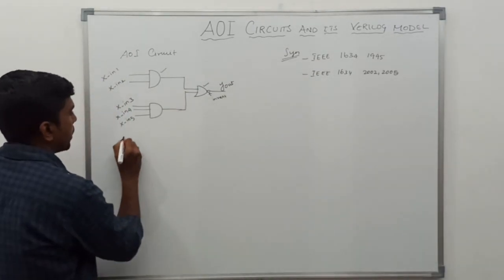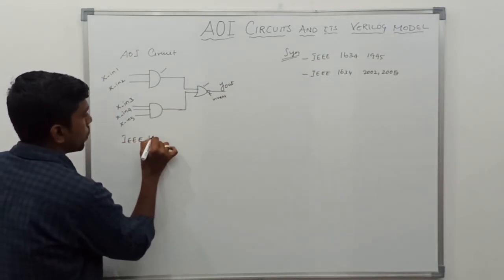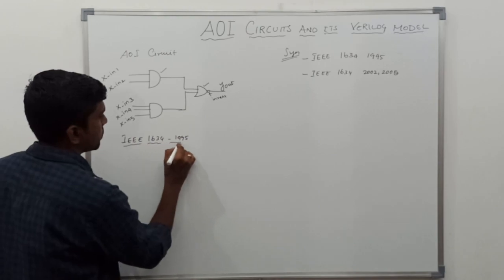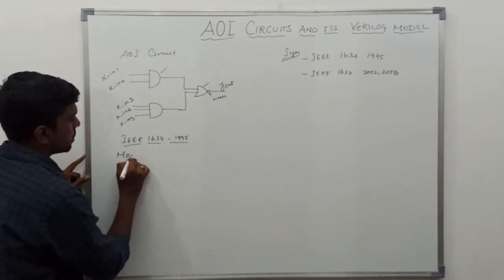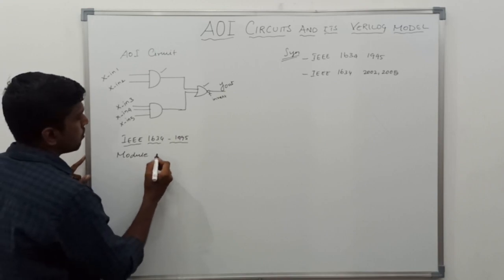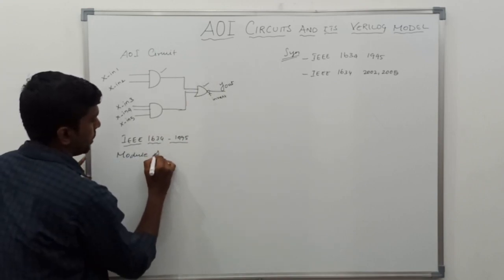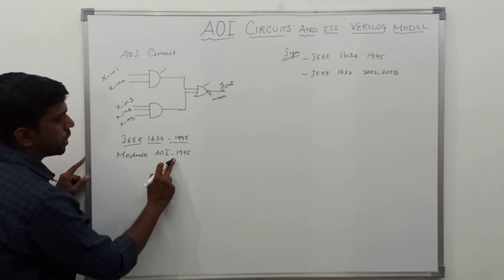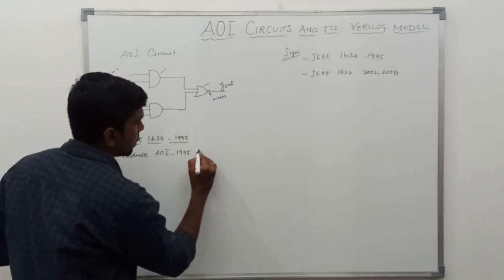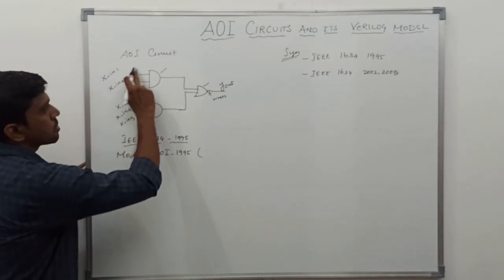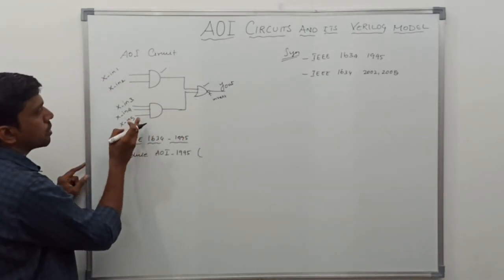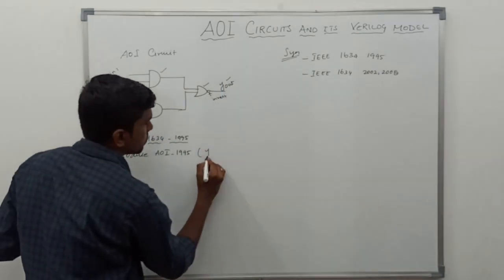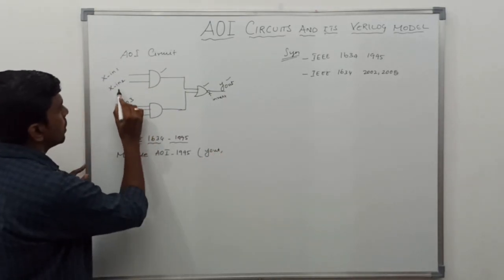Let me write the first format: IEEE 1634-1995. As usual, we declare the module. The module name is AOI, so the module name is AOI1995. Within the bracket, we declare the parameters — first the output, which is yout, then the input.